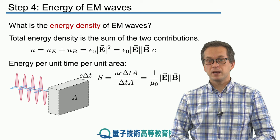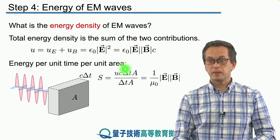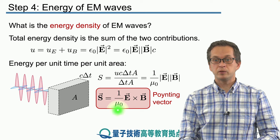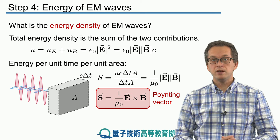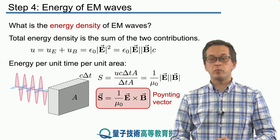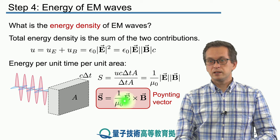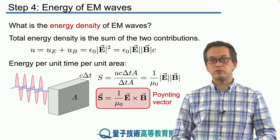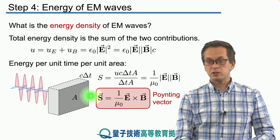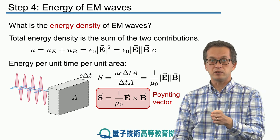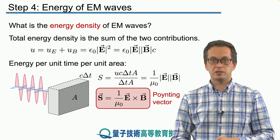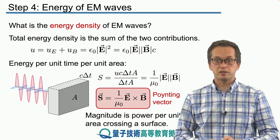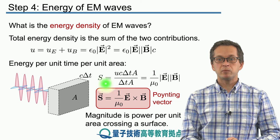This is an extremely important quantity in electrodynamics. Normally it is written in the following vector form: the vector S is given by 1 over mu naught times the cross product between E field and B field. It is known as the Poynting vector. Notice that the direction of S is given by E cross B — in other words, it is in the direction of propagation of the electromagnetic wave. The direction of this vector tells us in which direction the energy is being transferred, and the magnitude of the Poynting vector tells us how much power per unit area is crossing the surface. Energy per unit time is simply the power.